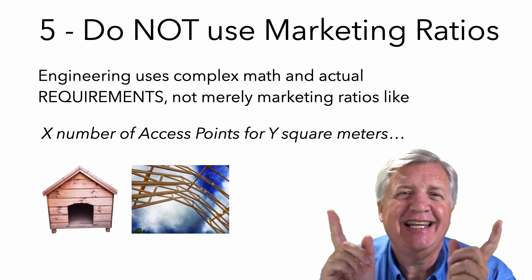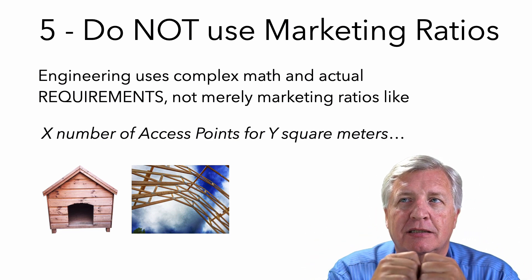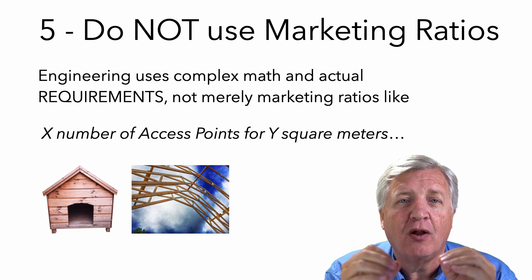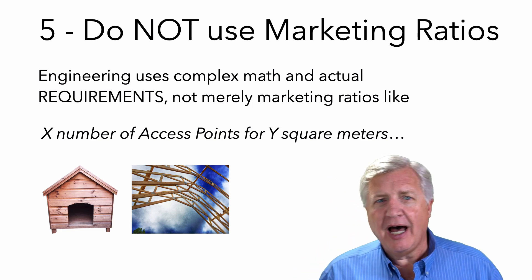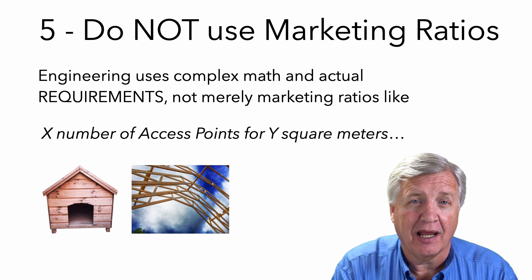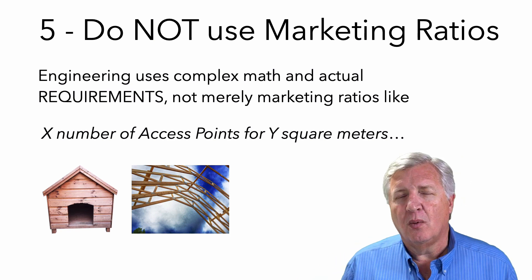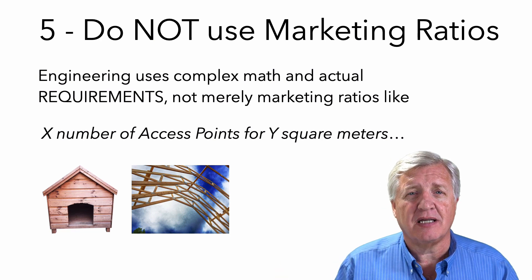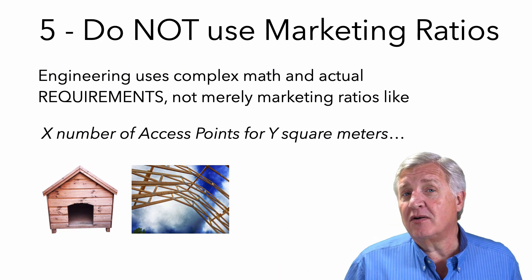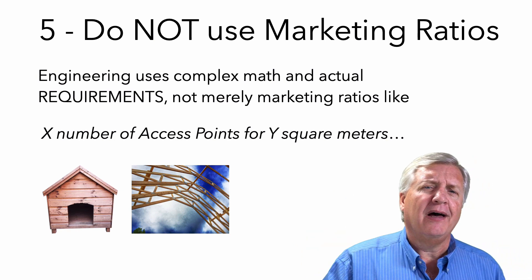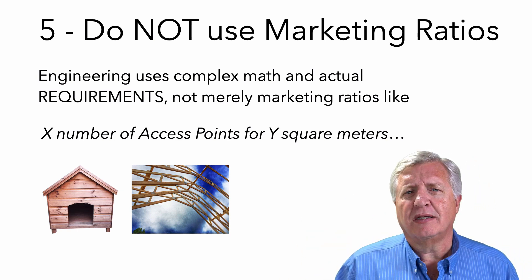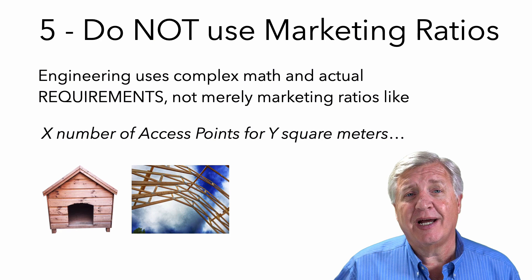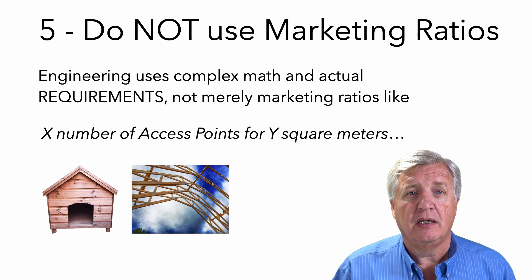I'm just going to say it right out: don't do it. Don't follow marketing ratios — they're not engineering, they're purely marketing. One AP per 2500 square feet? Well, maybe on average in that building at that time. That's not engineering, that's not design, that's just throwing stuff on a map. Some vendors just tell you: high densities every 2000 square feet, low densities every 250 square meters. These are numbers thrown out by people trying to sell you things. Don't do it.